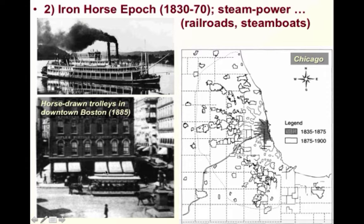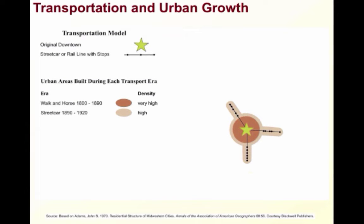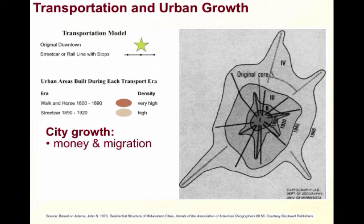Then there was the Steel Rail Epoch between 1870 and 1920. This era was dominated by the development of long-haul railroads and a national railroad network. Many cities expanded their hinterlands dramatically. You can see the impact of the electric streetcar as the lines radiated outward from the central business district — urban growth agglomerates around the rail lines much like the appendages of a starfish. The railroads stimulated economic growth and migration, increasing connectivity and accessibility and expanding the CBDs. Cities increased in size along these rail corridors, and the range of services and employment also increased in distance from the city center.